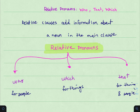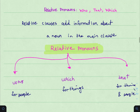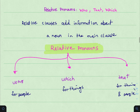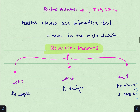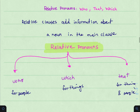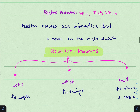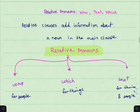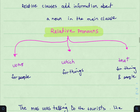Let me explain through examples. The relative pronouns are: who, which, and that. 'Who' is normally used with people. 'Which' is used for things. 'That' can be used for both — either for things or people. I use them with relative clauses to add more information about the noun in the main clause.